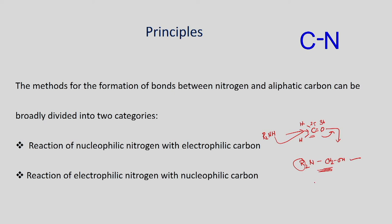On the other hand, if you have methyl iodide and an amine which can act as a nucleophile, it can undergo a substitution reaction — an SN2 reaction — and you will be able to form the product plus hydrogen iodide. So if the nitrogen is nucleophilic and you have an electrophile, it can undergo addition or substitution reaction.